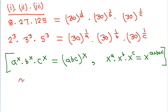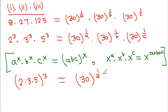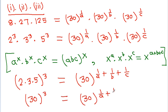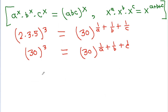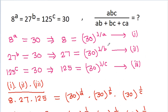The left-hand side becomes 2³ × 3³ × 5³, which equals (2 × 3 × 5)³ = 30³. So we have 30³ = 30^(1/a + 1/b + 1/c). Comparing powers on both sides, we get 3 = 1/a + 1/b + 1/c. And we have to find the value of abc divided by (ab + bc + ca).